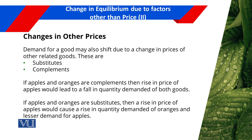Demand for a particular good also shifts due to change in prices of other related commodities. Those other related commodities may be substitutes or complements. Substitutes are those commodities for which, if the price of one commodity increases, demand for the other commodity will also increase. Two commodities are complements if the price of one commodity increases and there is a decrease in quantity demanded of the other commodity.